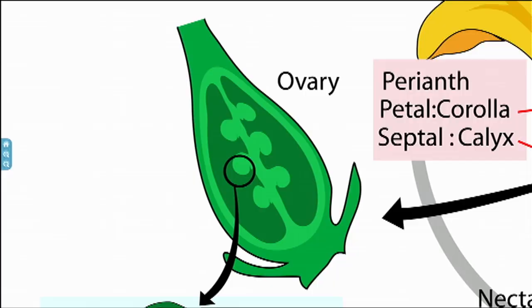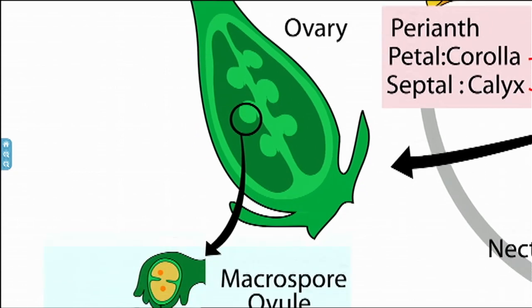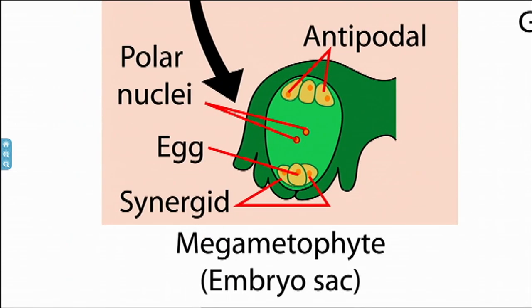On the female side we can go up to the carpel tissue, and inside the carpel tissue you have this structure called the ovary. And inside the ovary you have the ovules. The ovules are like the pollen — they are a distinct and individual plant, technically.